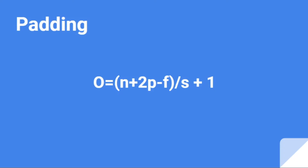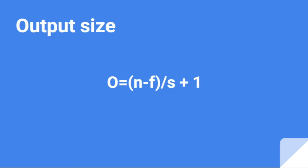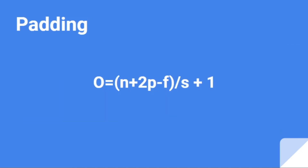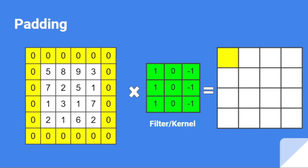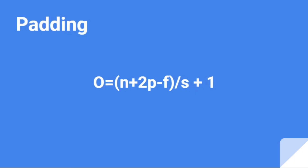Now let's look at the updated equation that incorporates padding: O = (N + 2P minus F) / S + 1. Applying this to our example: N = 4, P = 1, F = 3, S = 1. So (4 + 2×1 minus 3) / 1 + 1 = (6 minus 3) / 1 + 1 = 3 + 1 = 4. Our output is 4, confirming the equation is correct.